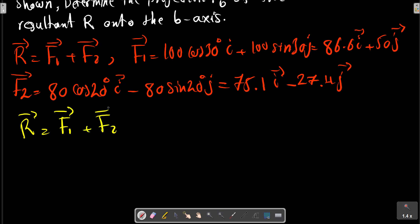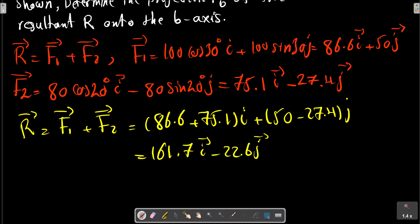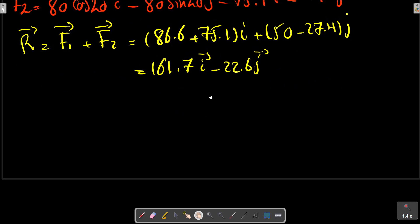F2 equals minus 80 sin 20 j. Now the resultant is R equals F1 plus F2. We can obtain the resultant and the projection of R on a.